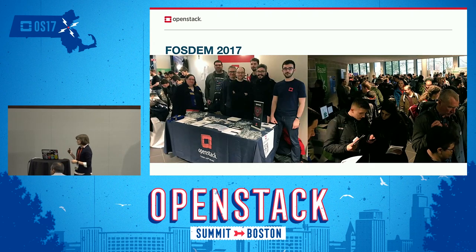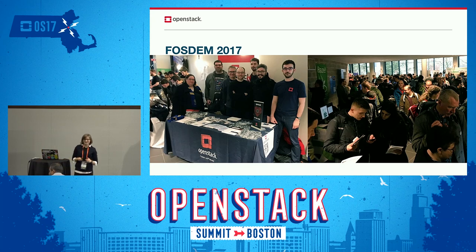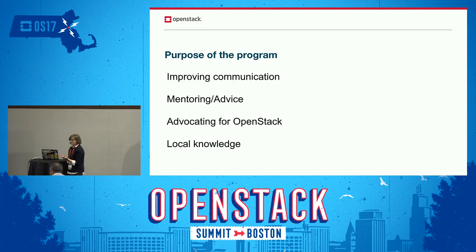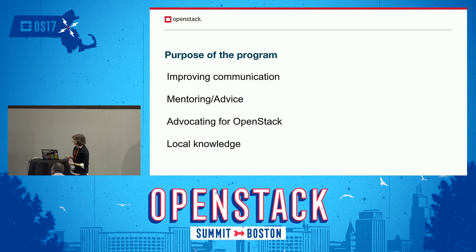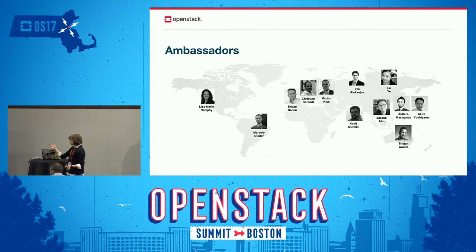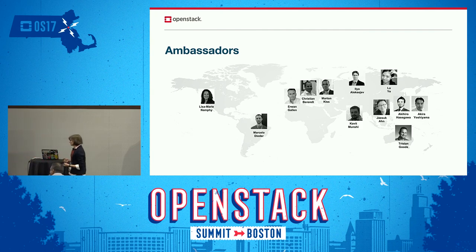A small example of advocacy was FOSDEM in 2017 — a couple of our ambassadors are pictured there doing a great job advocating for the OpenStack Foundation and the technology. And lastly, local knowledge: we might not have exact local knowledge for all regions, but by having ambassadors there, it helps us keep communication solid, with less conflict and less misunderstanding. We have ambassadors all around the world, and we very much value them within our community.